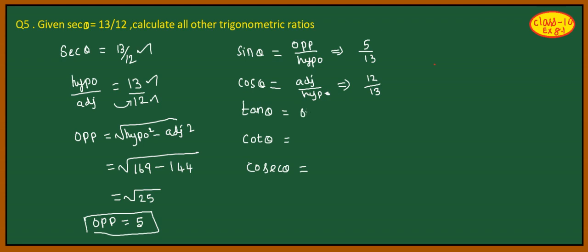Then, tan theta. What is the formula? Opposite side by adjacent side. So, opposite side is 5 and adjacent side is 12. Therefore, tan theta equals 5 by 12.